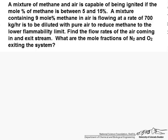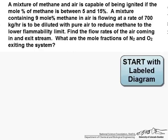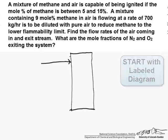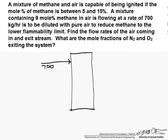So the first thing that we're going to do is draw our picture. So here's our system, and we have coming in a flow rate of 700 kilograms per hour, and this is 0.09 moles of methane per mole of mixture, so it's 0.91 air.